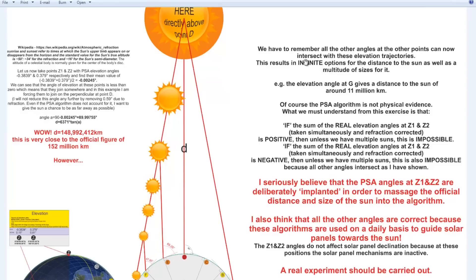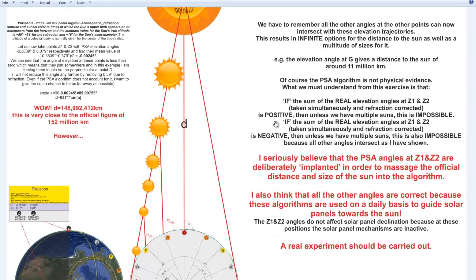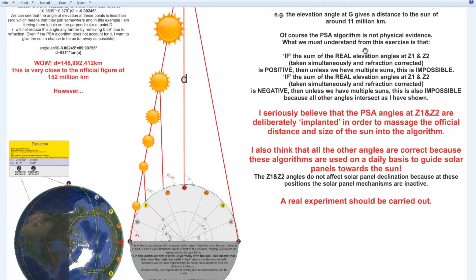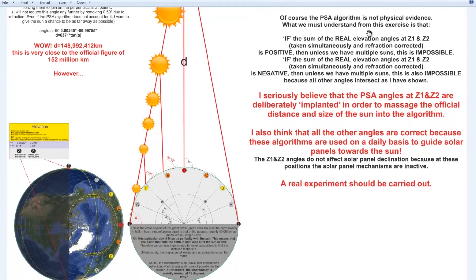However, we have to remember that all the other angles at the other points can also now intersect with these elevation trajectories. This results in infinite options for the distance to the Sun, as well as a multitude of sizes for it. For example, the elevation angle at G gives a distance to the Sun of around 11 million kilometers. Of course, the PSA algorithm is not physical evidence. What we must understand from this exercise is that if the sum of the real elevation angles at Z1 and Z2 taken simultaneously and refraction corrected is positive, if the sum is positive, then unless we have multiple Suns, this is impossible. Also, if the sum of the real elevation angles at Z1 and Z2 is negative, then unless we have multiple Suns, this is also impossible because all the other angles intersect, as I have shown.